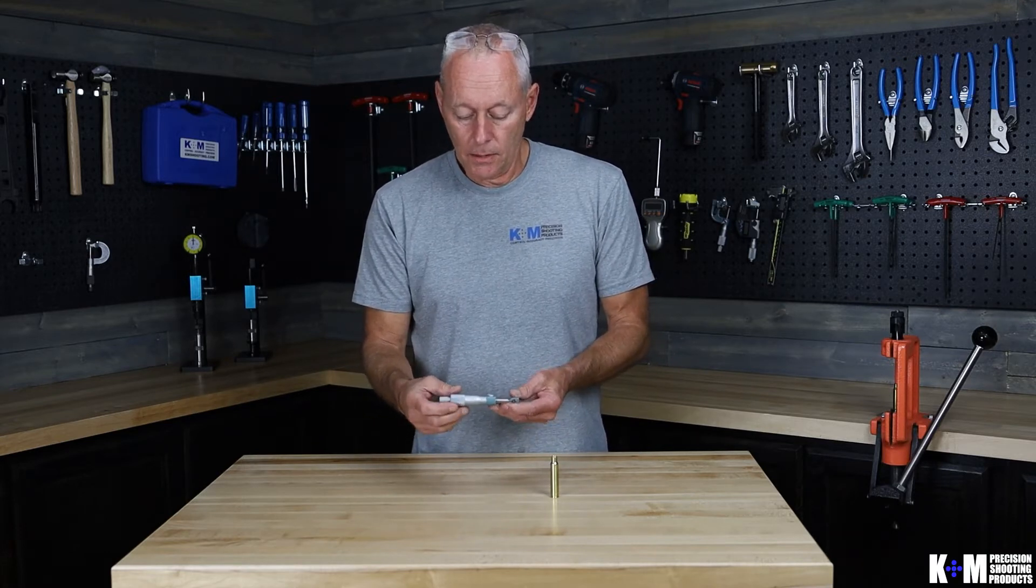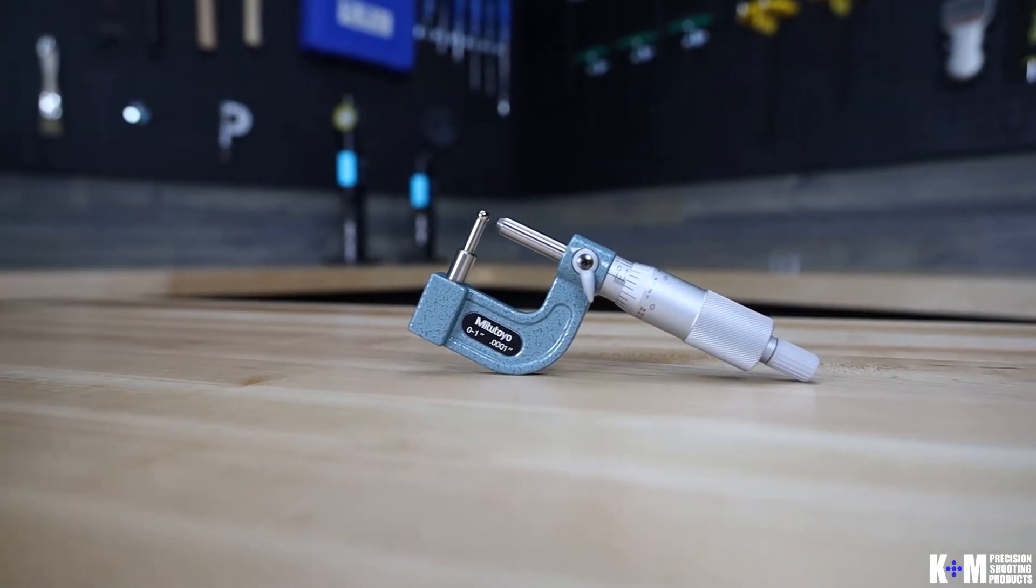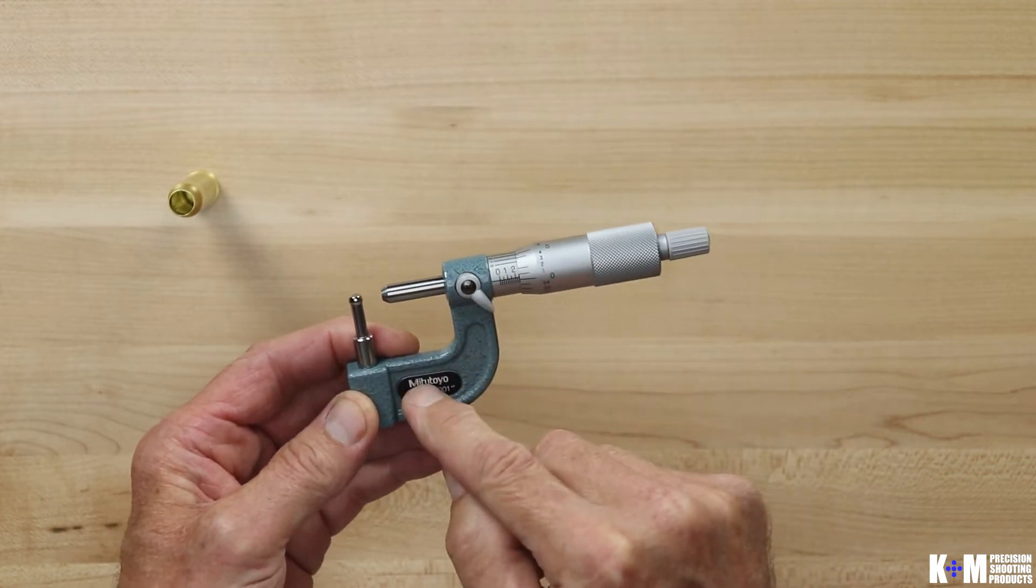It's really not that hard, but first let's take a look at a micrometer and what makes up a micrometer so that we can then talk about how to use one. First of all, the frame is this piece of the main structure here.